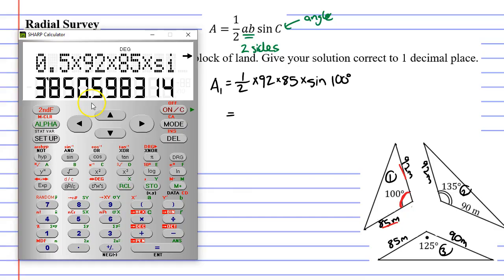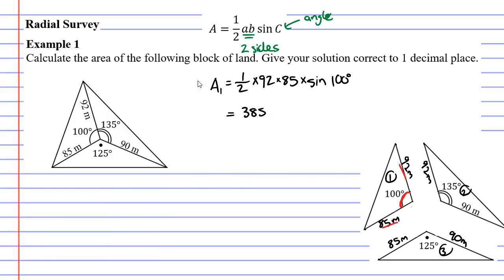And I get 3850.598. So I'm not at my final solution yet. They want it to one decimal place. So for now I'm just going to round this to three decimal places. 3850.598. And this is in metres and it's an approximation at the moment. So I'll put approximately equals to.